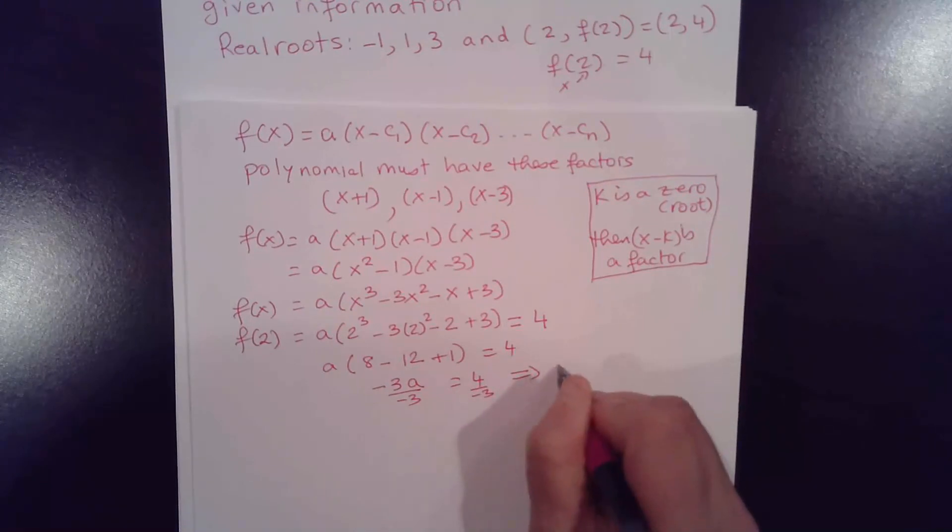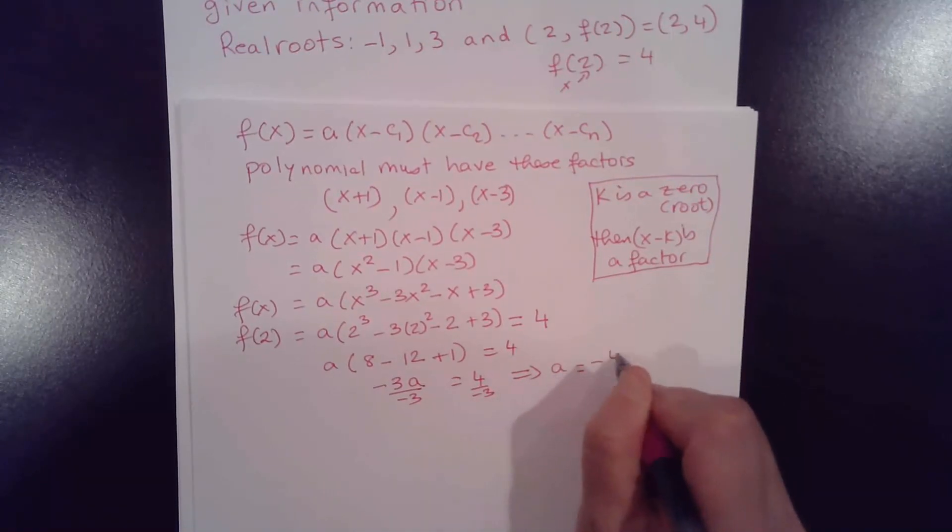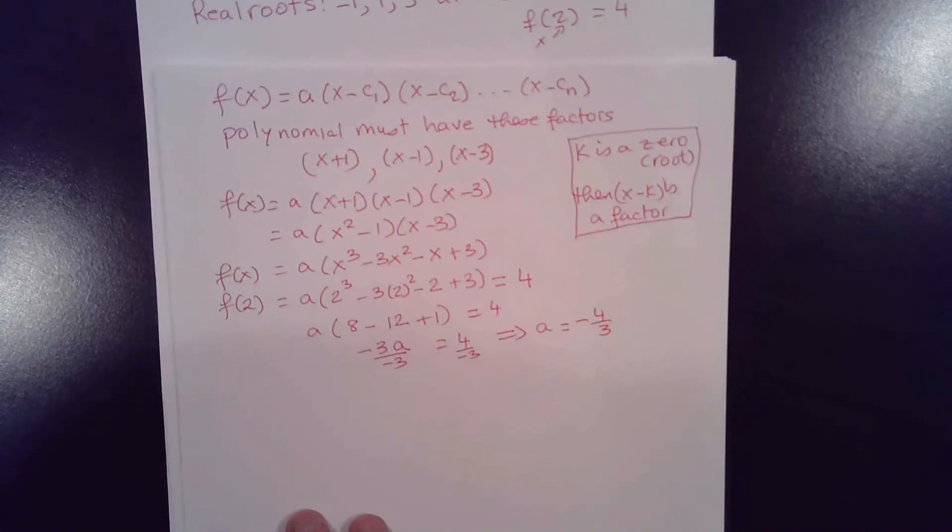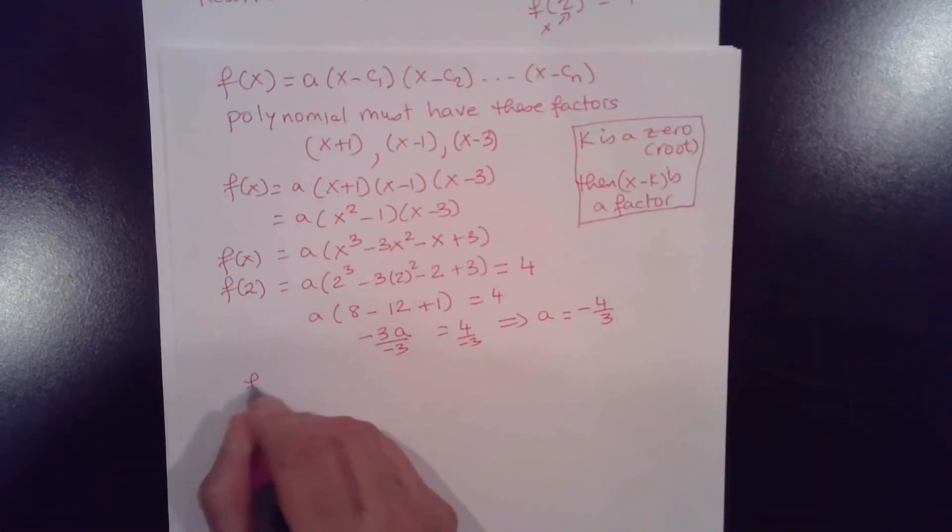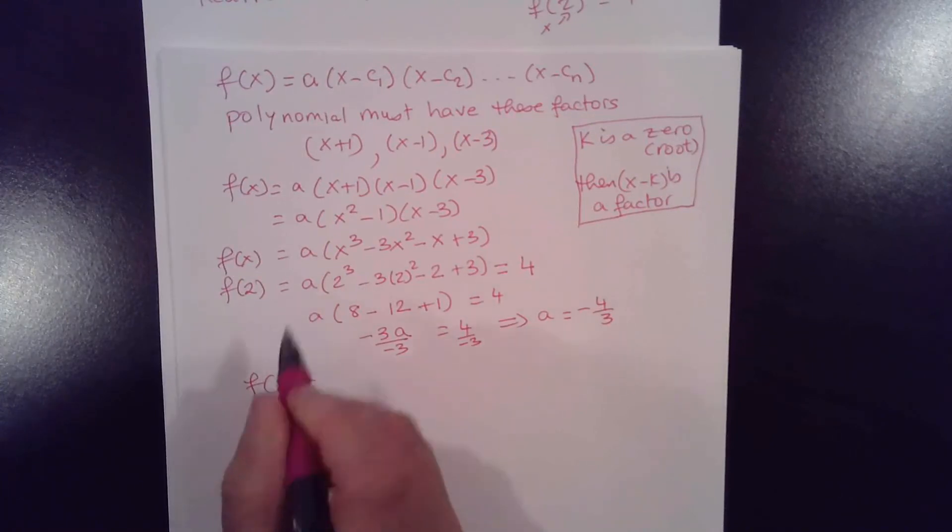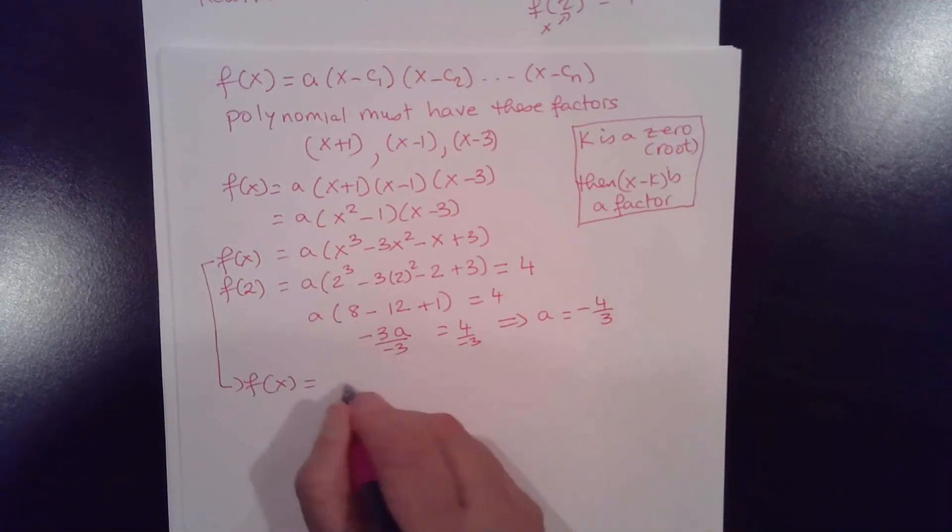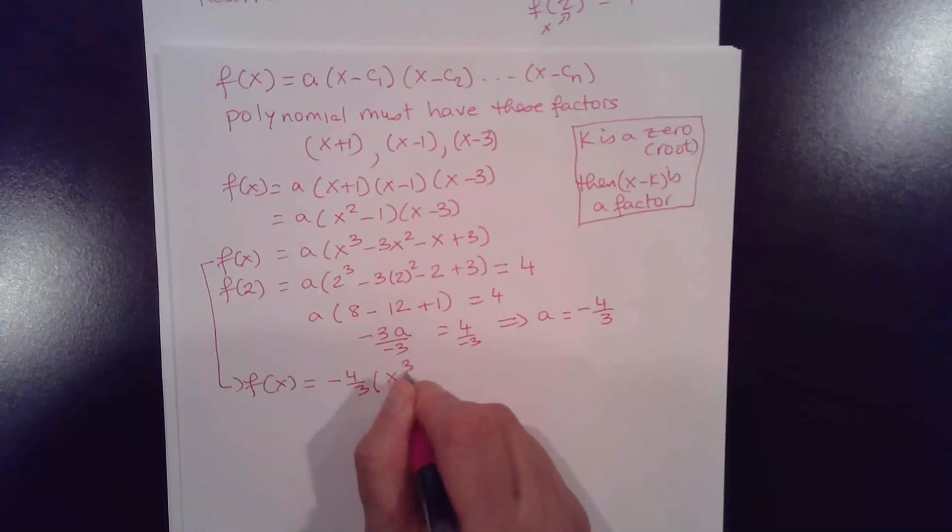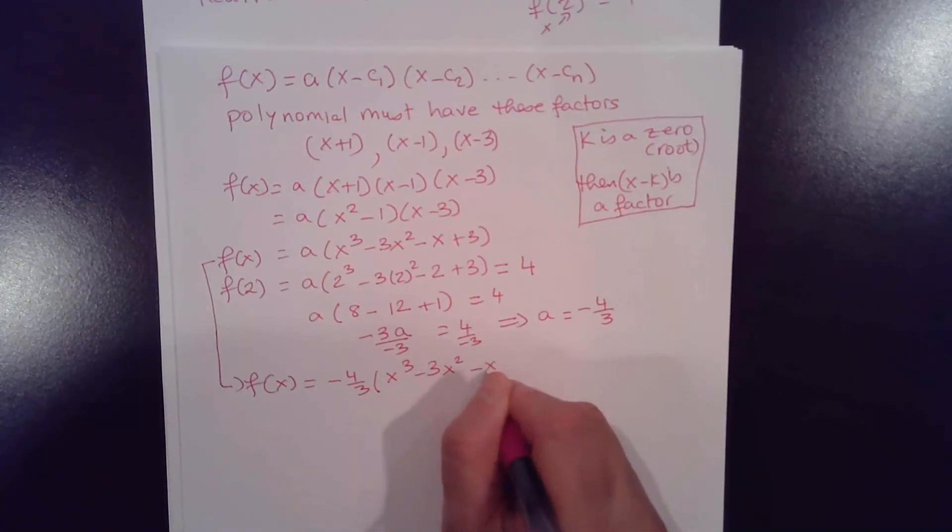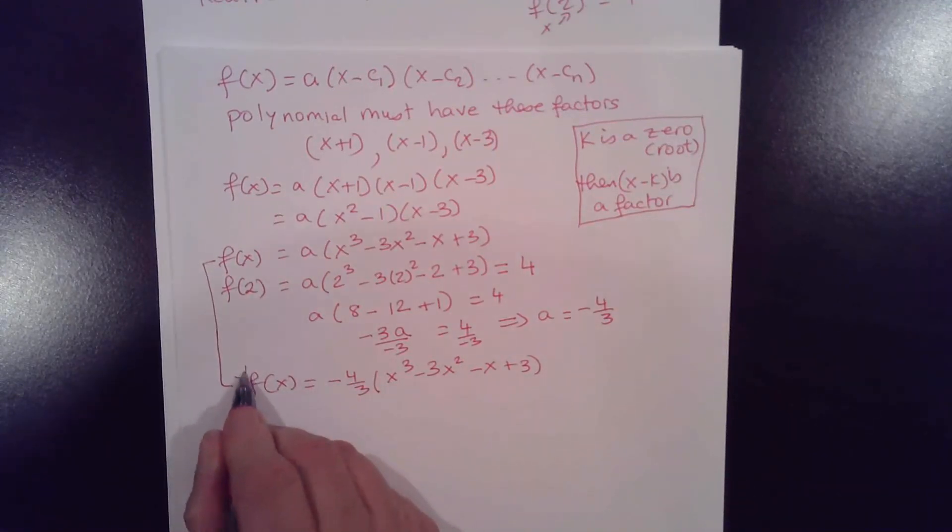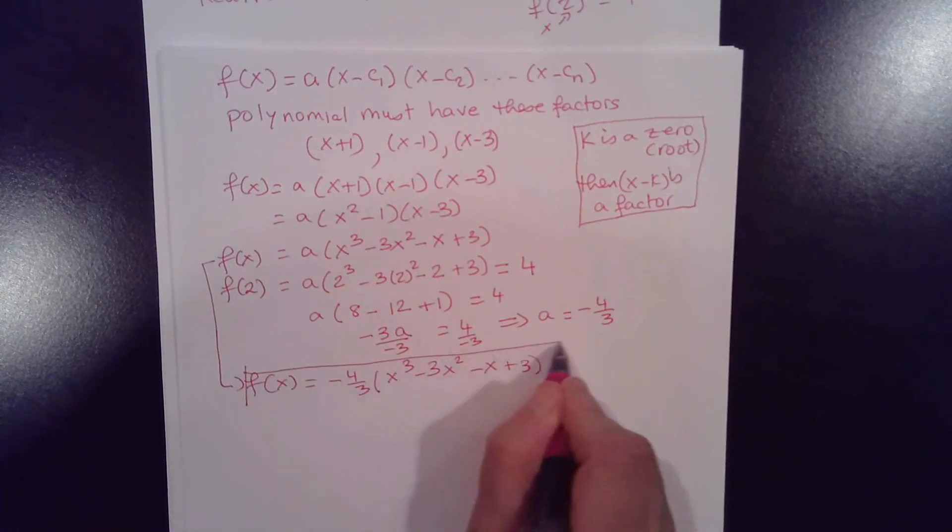So the polynomial function that they want us to construct would become f(x) equal to, using this one right here, a is negative 4 thirds, x cubed minus 3x squared minus x plus 3. This would be our function, you can if you want to distribute the a, but this is fine, and this is the polynomial function.